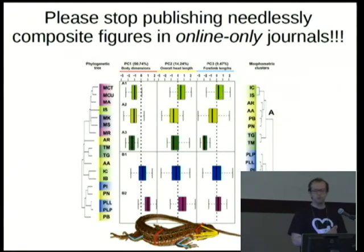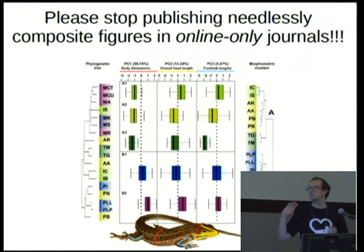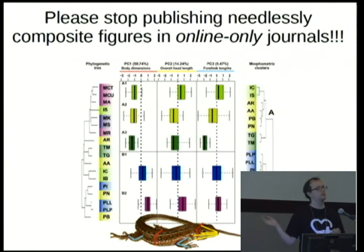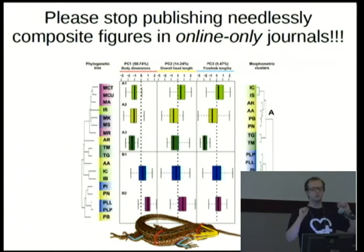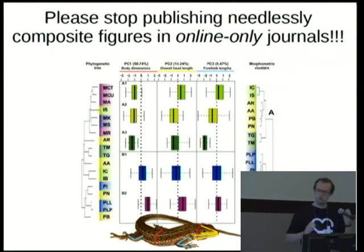Even in online-only journals, people are still publishing these ridiculously composite figures which are not machine-readable, with no data behind the figure provided. Can we please stop doing this and have individual figures instead? We can display them with HTML next to each other if needed, but there's no need to squish everything into one figure — it really harms both human and machine readability. And that's it. Thank you.